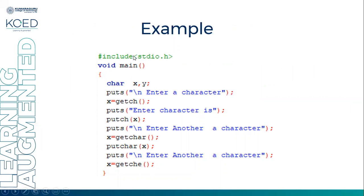Looking at the code example: we include stdio.h and declare character variables x and y. We use puts to print a message asking the user to enter a character. We use getch to read a character into x, then putc(x) to display it. Then we ask for another character using getchar into x, and display it with putchar. Finally, we use getch for a third character stored in x to demonstrate its echo behavior.